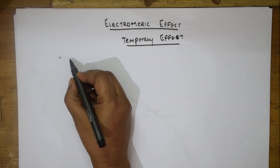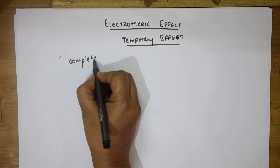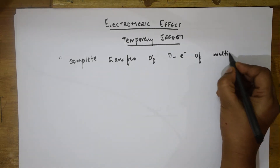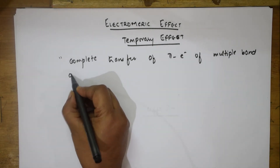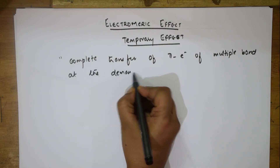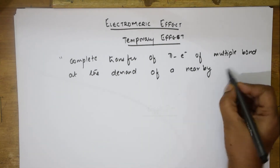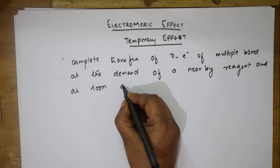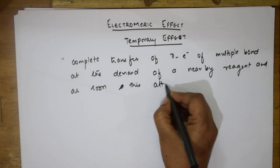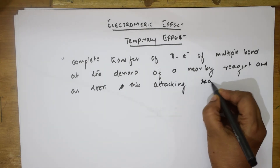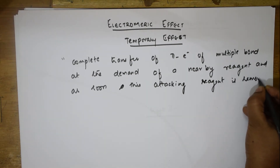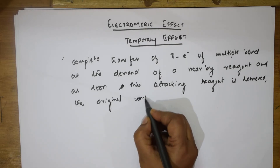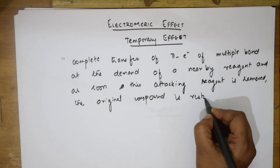Let us write the definition of Electromeric effect. It involves complete transfer of pi electrons of a multiple bond at the demand of a nearby reagent. And as soon as the attacking agent is removed, the effect is lost and the original compound is restored. That is why we call it a temporary effect.